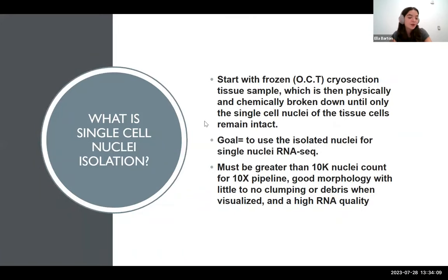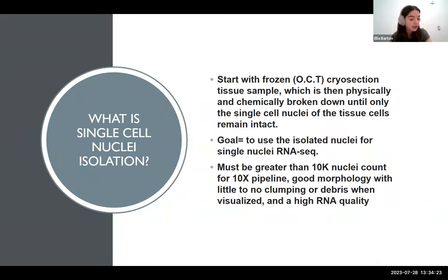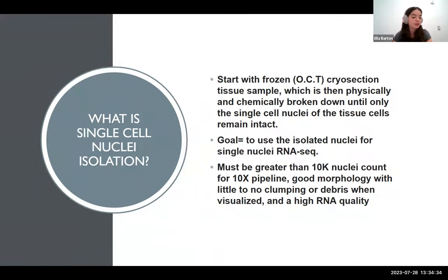At this point, you may be wondering: what is single-cell nuclei isolation? This is the process of taking a section of tissue, suspending it in an OCT block, and sectioning it using a cryostat machine. It is then physically and chemically broken down until only the single-cell nuclei of the tissue cells remain intact. The goal of nuclei isolation is to use the isolated nuclei for single-nuclei RNA sequencing, which can be used for profiling gene expression in cells which are difficult to isolate.